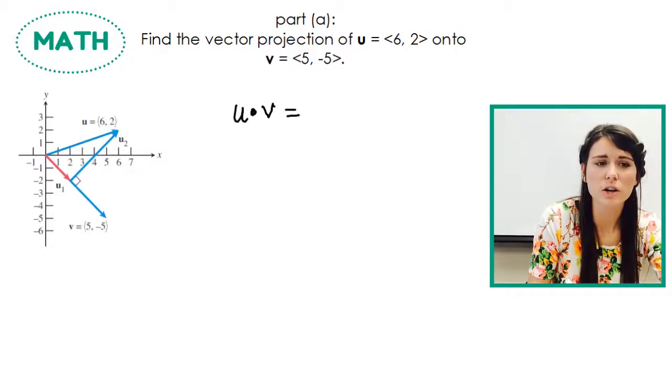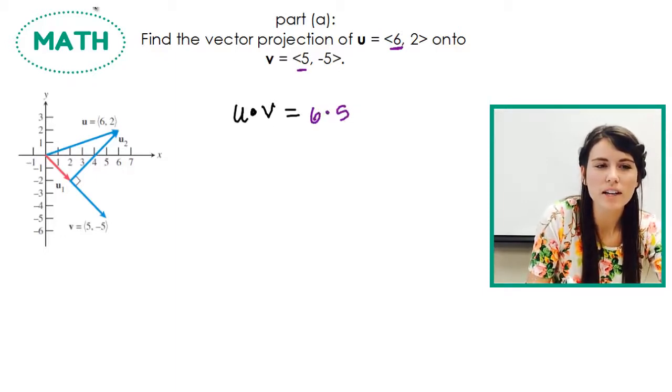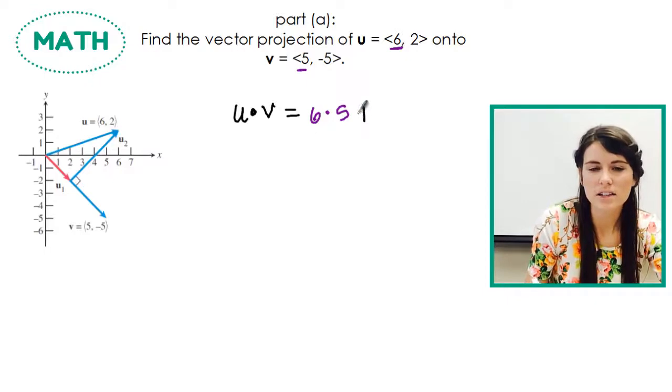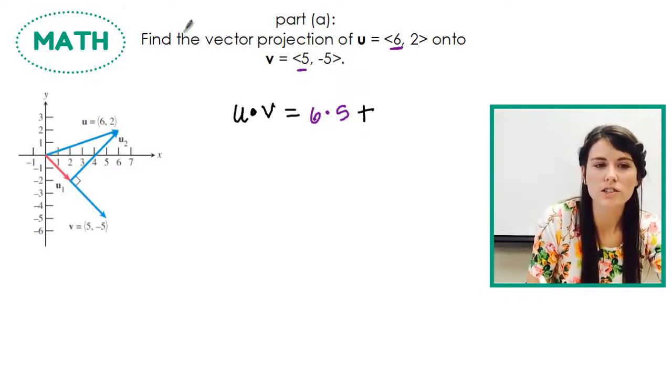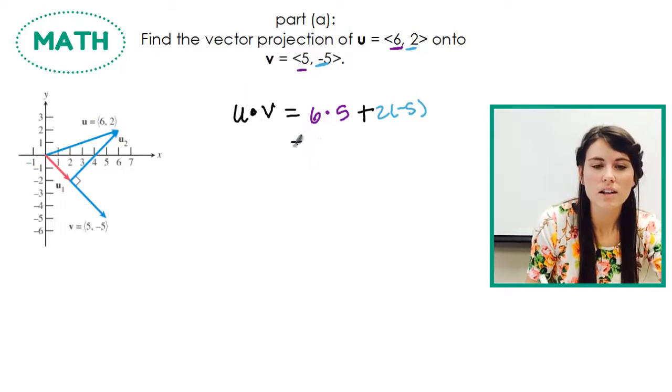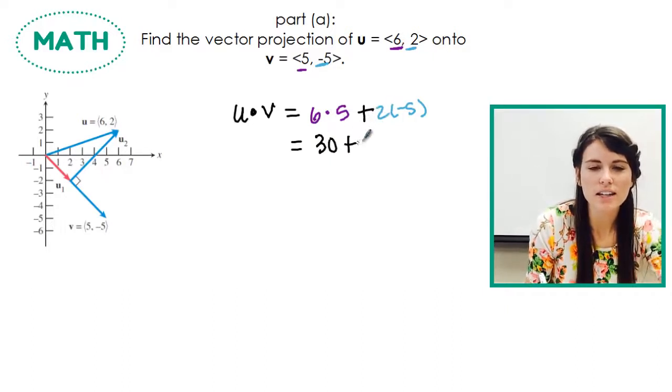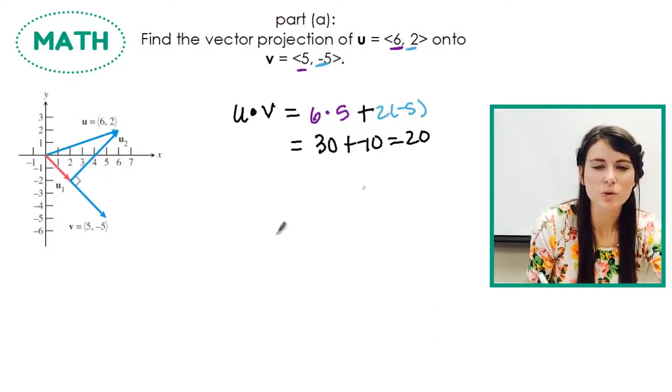So dot product is actually a really simple concept. You take the first coordinates in each vector and you multiply those together. So I'm going to do 6 times 5 and then you add it to the second coordinate in each vector. So negative 5 and 2. Multiply those together and then that's going to be your dot product. So 6 times 5 is 30 plus negative 10 is 20.